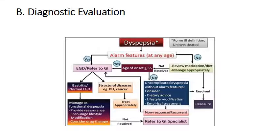How to diagnose a case of dyspepsia: use careful history, physical examination, and some screening laboratory tests. If satisfied with the diagnosis, proceed accordingly. If not, the American Gastroenterology Association and American College of Gastroenterology suggest a strategic algorithm. In this algorithm, a patient with suspected dyspepsia is categorized using the Rome-3 criteria according to two features: the presence or absence of alarm features at any age, and whether the age of onset is below or above 55 years old.